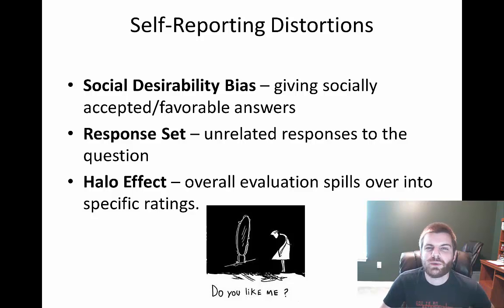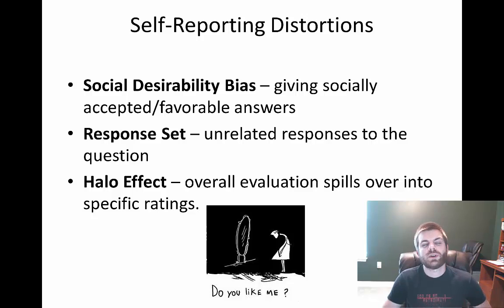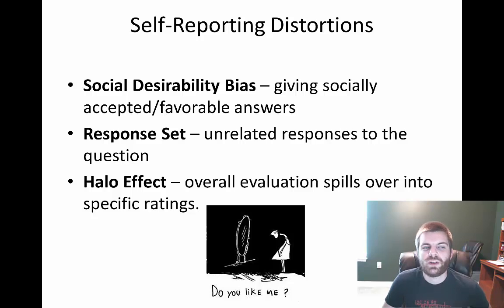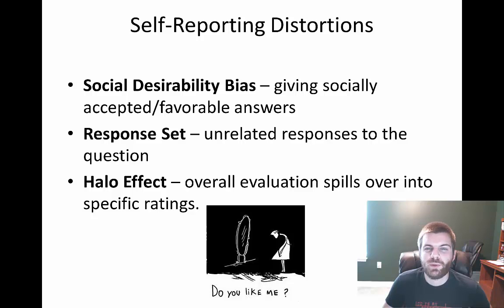The final topic is some of the distortions among self-reporting. The first is social desirability bias — on a survey, you just give socially acceptable or favorable answers, essentially lying. Instead of saying how you may really feel, you put down what you think people would want to hear, what people would be more accepting of, or what you think is the most correct and proper way to answer the question.